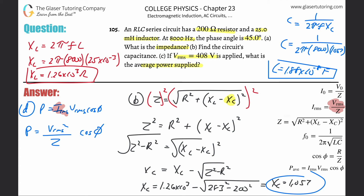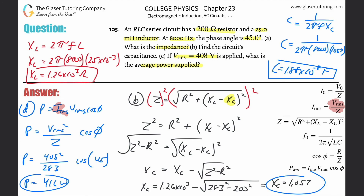So the voltage is 408 volts squared, divided by the impedance of 283 ohms — using the exact value 282.84 — then multiplied by cosine of 45 degrees. Make sure your calculator is in degree mode. The result is about 416 watts. Thanks for tuning in!